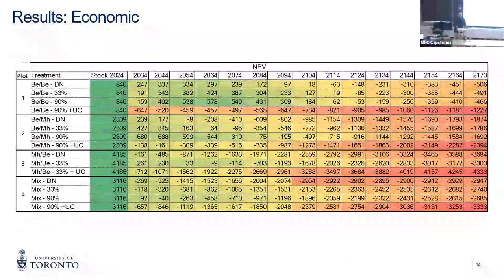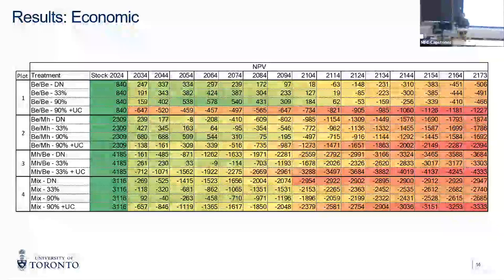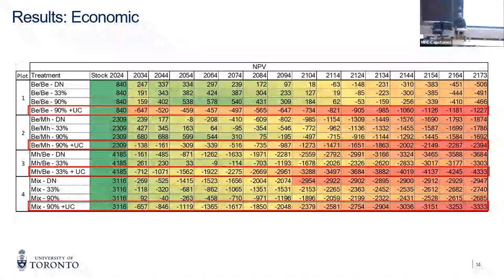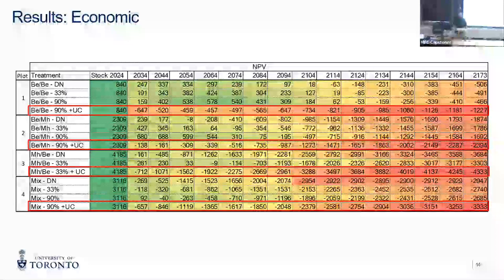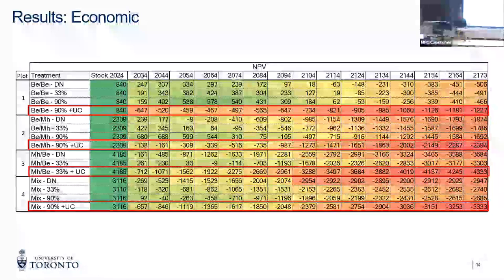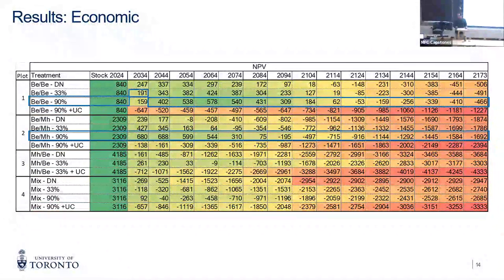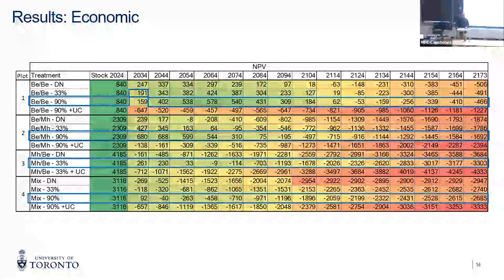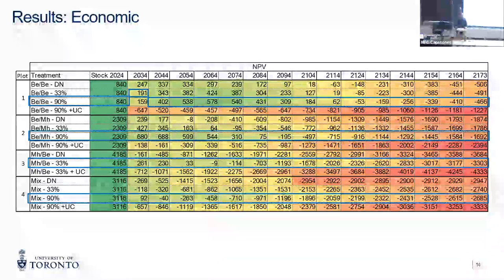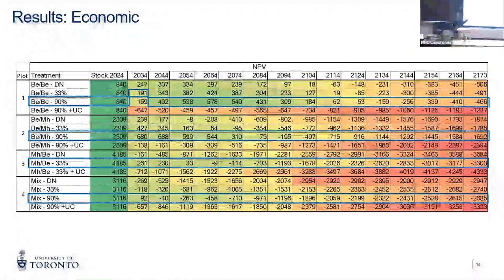For the economic evaluation, unfortunately all understory control scenarios have the worst results economically. $700 per hectare applied in year zero over a 150-year discount period is likely to produce a bad economic result. For the better results, across most scenarios 90% beech removal in the first year is the best option. In 2034 for plot one, the 33% is slightly better, but overall across all treatments the 90% thinning is the best treatment economically.